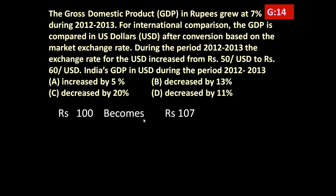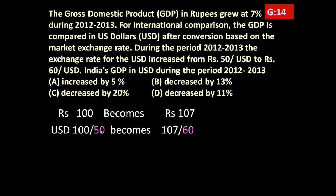Growth rate is 7%, so 100 rupees becomes 107. Now looking at the exchange rate — rupees 50 per US dollar initially. So 100 rupees in terms of dollars equals 100 divided by 50, because the dollar rate was rupees 50. So 100 rupees equals how many dollars? It equals 100 upon 50, which is 2 dollars.